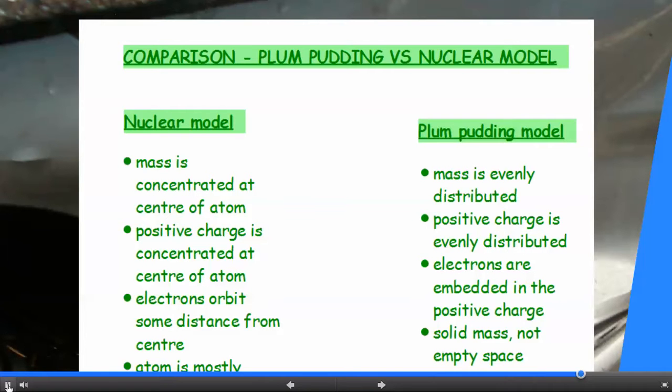Now the nuclear model shows that the mass is concentrated at the centre of the atom, whereas in the plum pudding model, the mass is evenly distributed.